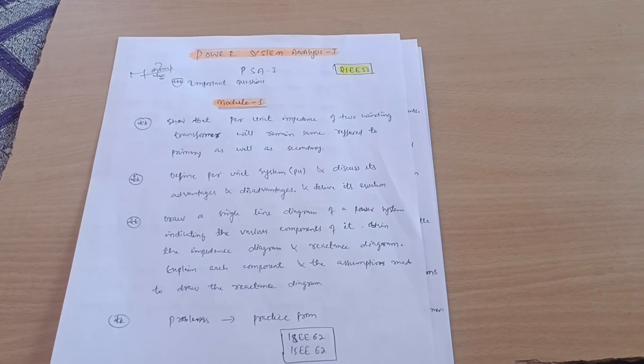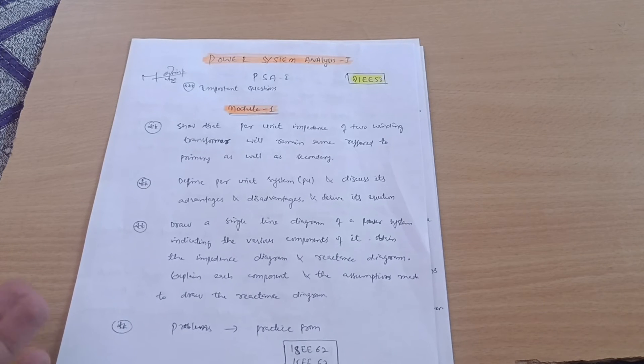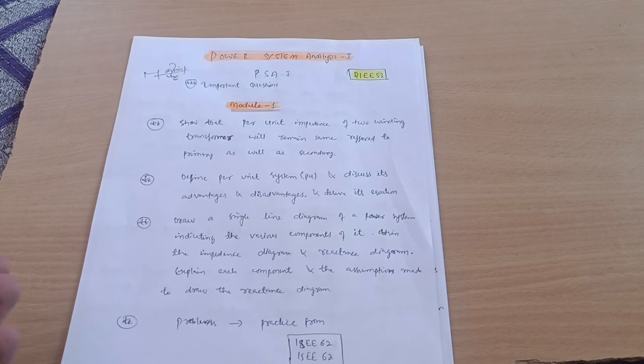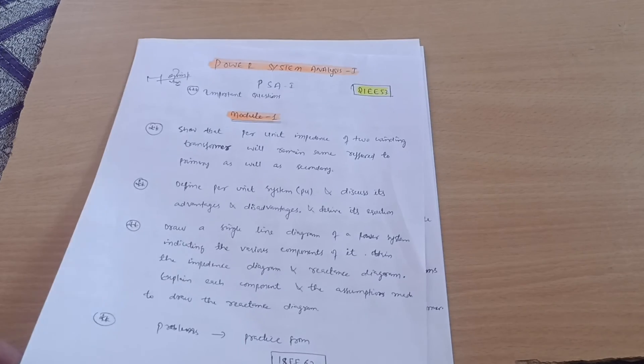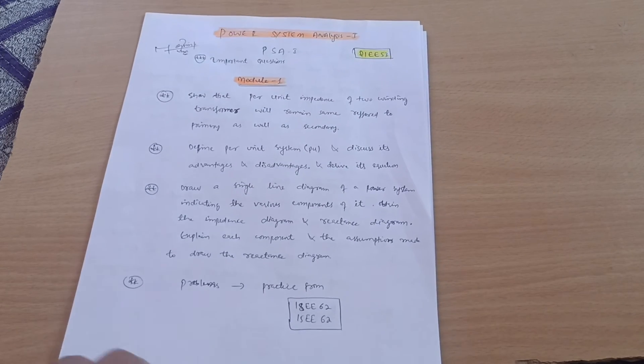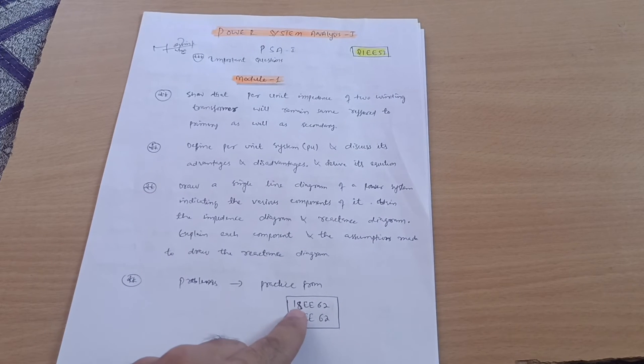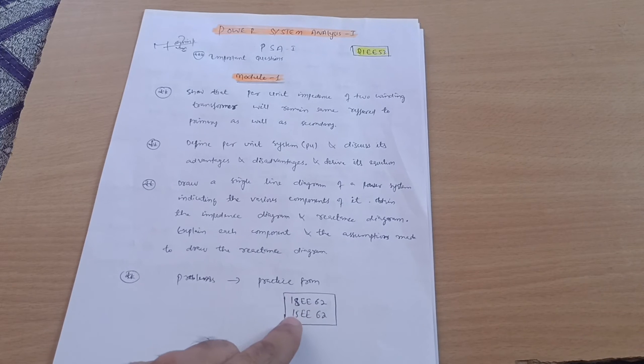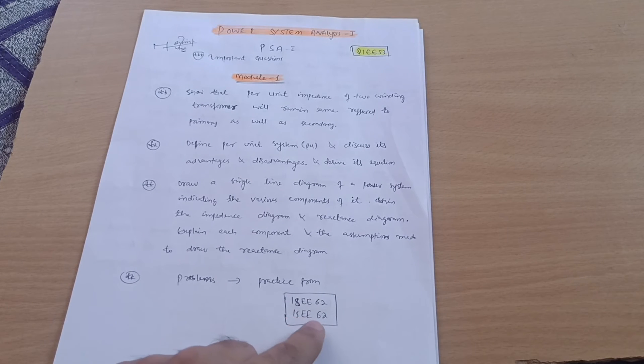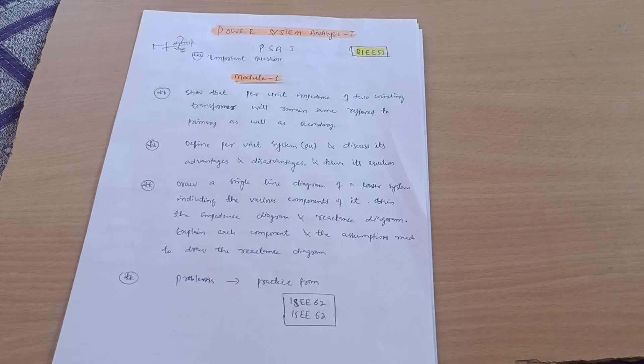If you are able to take the screenshot, please do so. If I discuss it, it will take a lot of time and you might not have much time to listen to my video. Just take the screenshot. For the problematic part, you should refer to 18EE62 and 15E6062 - these are the papers of 15 scheme and 18 scheme.